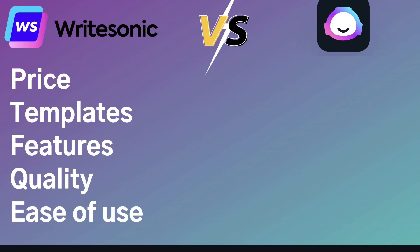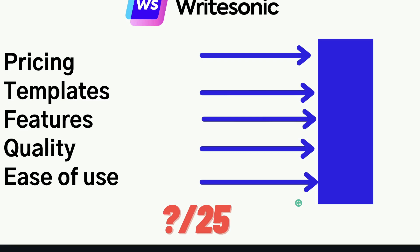While doing this comparison, we'll be looking at things such as the pricing, the templates included in both Writesonic and Jasper AI, the features included, the quality of the AI content, and lastly, how easy or beginner-friendly both of these AI copywriters are. Be sure to stick around until the end of this video because I'll be giving both Writesonic and Jasper AI a score out of 25 and making my recommendation as to which AI copywriter is best suited for you and your business.